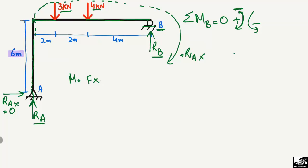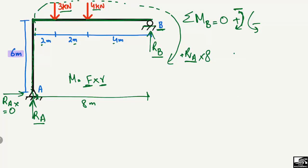Here RA is the force and the moment arm is the perpendicular distance from RA to point B, which is 2 meters plus 2 meters plus 4 meters, totaling 8 meters. The next step is to find all moments about point B.